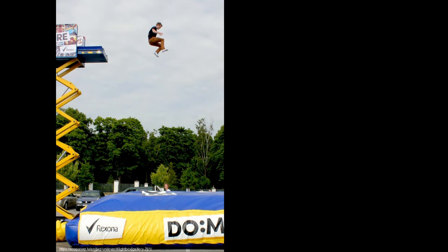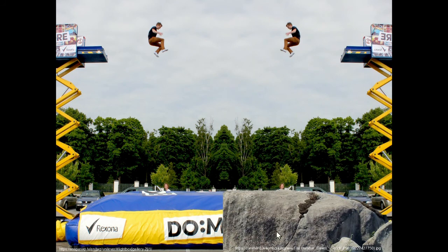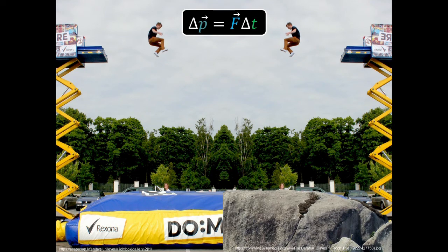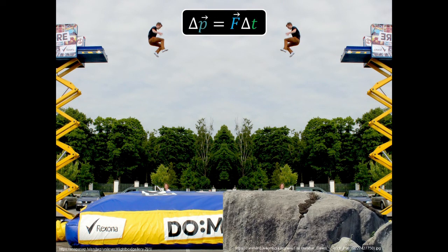If a person jumps onto a crash mat versus landing on a big rock, in which case is there a larger change in momentum? Both people fall the same distance, so they're going just as fast on impact, and they both come to a stop either way. Since both had the same change in velocity and the same mass, they had the same change in momentum — the same impulse in both cases.